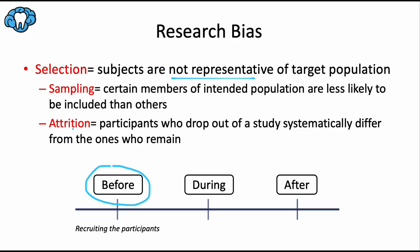Attrition bias is where participants may have been sampled in a representative way, but the subjects who drop out of the study are systematically different than the ones who remain. For example, non-compliant orthodontic patients might drop out of a study, leaving the compliant patients in the study and skewing your results toward treatment efficiency. If I'm researching the effectiveness of rubber band wear and all the compliant patients stayed in the study while the non-compliant ones dropped out, it's going to look like rubber bands really work — maybe more so than they truly do.